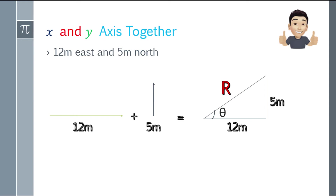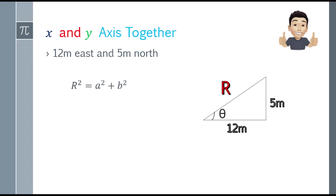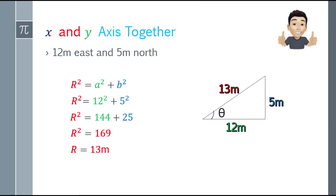To find the resultant, we can use the Pythagorean theorem. We have a right triangle where the 12 meters and 5 meters are the legs, and the resultant will be the hypotenuse. The formula is r² = a² + b². So algebraically, r² = 12² + 5² = 144 + 25 = 169. Taking the square root gives us 13. So the resultant of 12 meters east and 5 meters north is 13 meters.